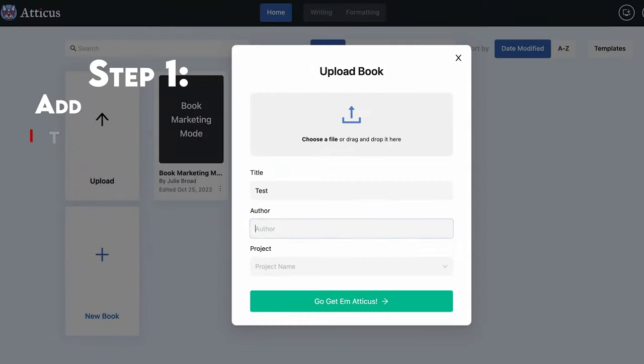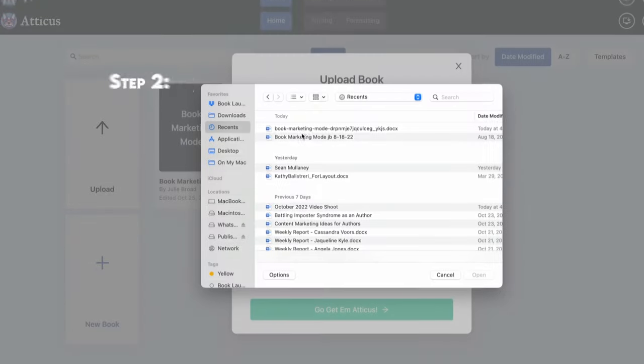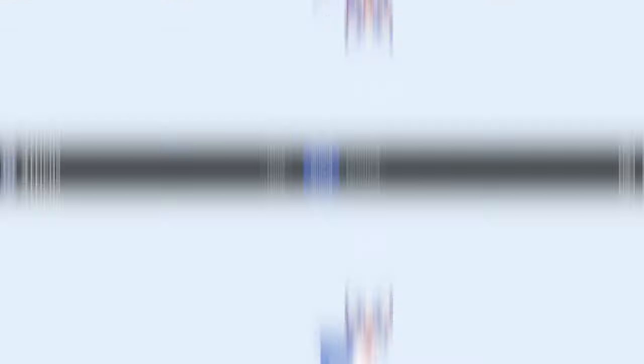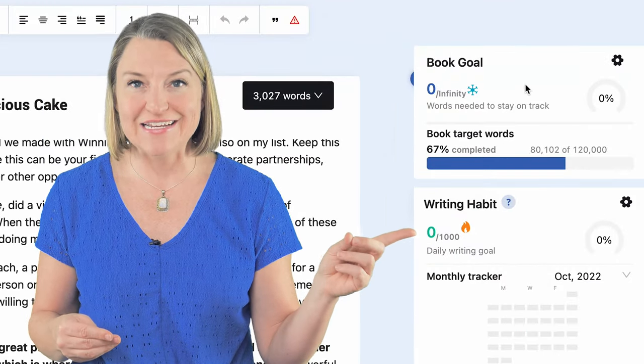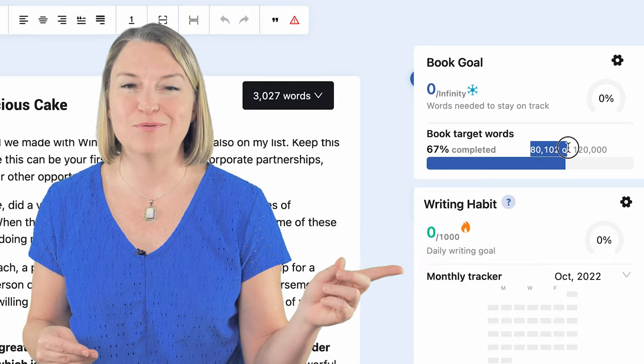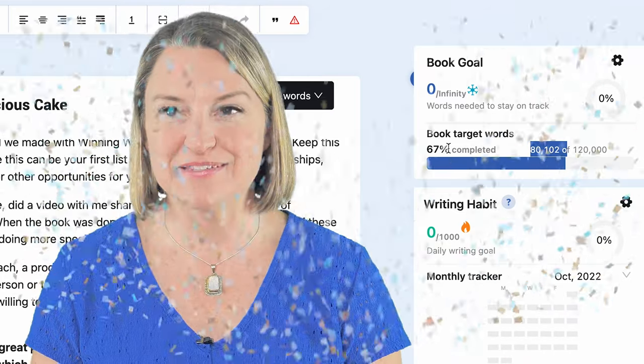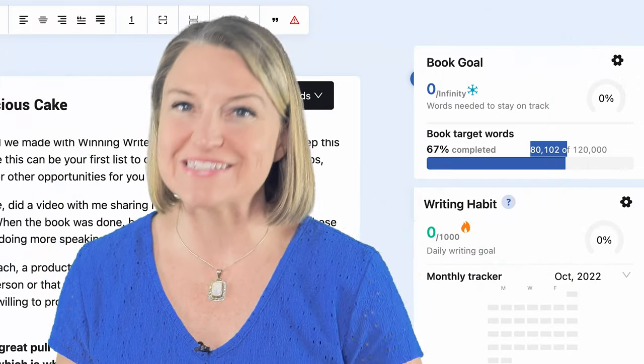And of course, if you plan to use Atticus for the layout of your book, you would export it to edit it and then import it back in. The good news is that was pretty easy to do. Check it out. Easy peasy lemon squeezy. Oh, and this is after I edited it. So look how much we've already cut it down now. We're down to 80,000 words. It's still a big book, but it's better than it was.